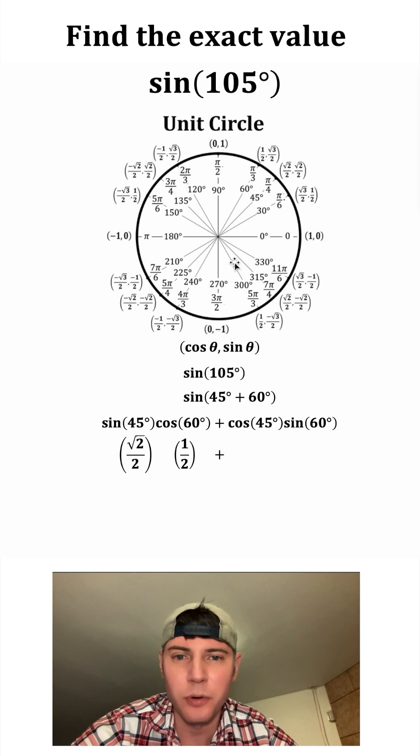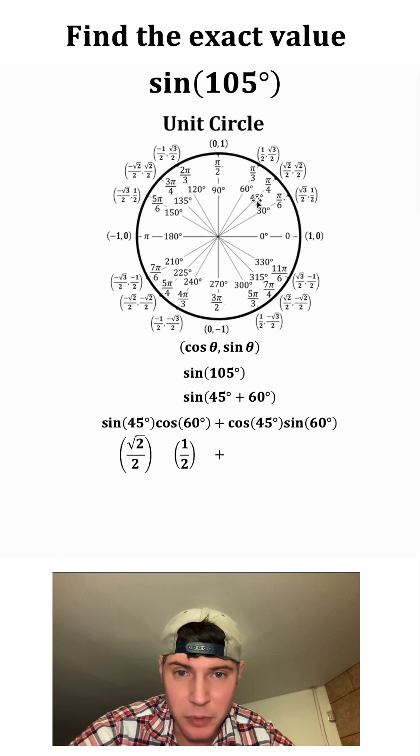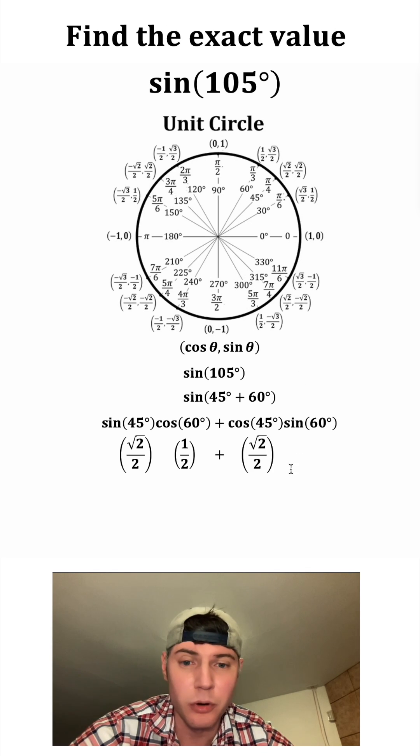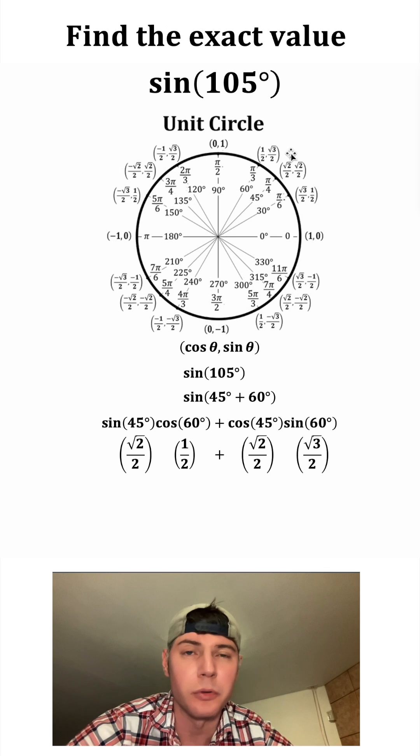And then we're going to add to that cosine of 45. We find the 45, we want the cosine of that, which is the x value. So cosine of 45 is root 2 over 2. And then sine of 60 will be the y value here, which is root 3 over 2.